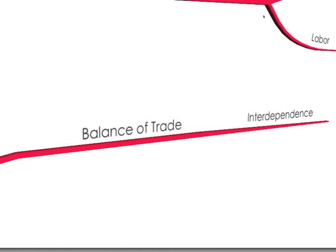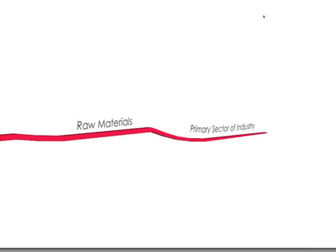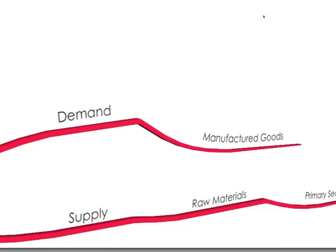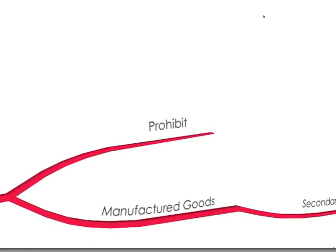Colonization and a balance of trade creates interdependence from the colony on the country. The colony supplies raw materials in the primary sector of industry and any demand for manufactured goods in the secondary sector of industry, provided by the mother country.